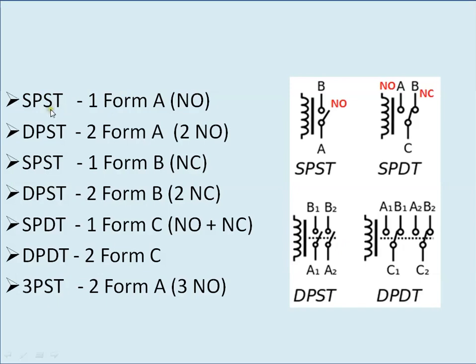These are the different names for the form ratings. For a relay requiring a single pole single throw, it can be defined as one Form A, which has one NO contact. If your application requires two NOs, you select two Form A contact rating, which is also known as double pole single throw — it has two poles and one throw, meaning only one position which is the NO position.